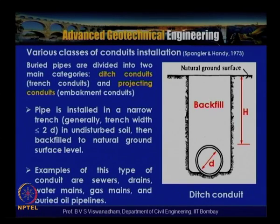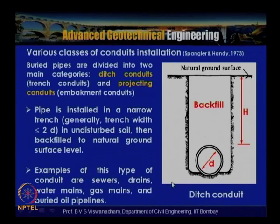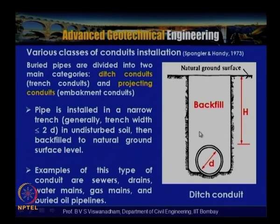A trench conduit consists of a pipe of certain diameter d placed in an excavated trench with height h measured above the pipe centerline. The natural ground forms the side walls, the pipe is placed, backfill is added, and the trench is brought back to the natural ground surface. This type is called a ditch or trench conduit. The pipe is installed in a narrow trench, with trench width BD generally less than or equal to two times the pipe diameter, in undisturbed soil.